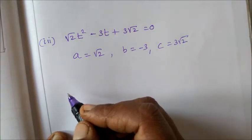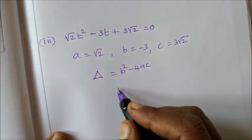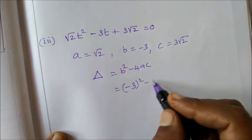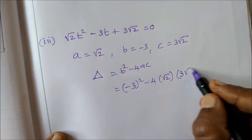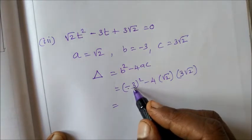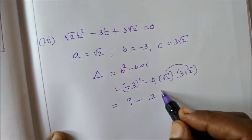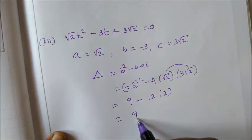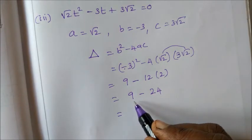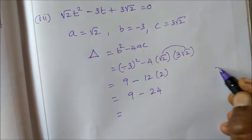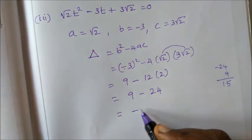To find nature of roots, delta = b² - 4ac. (-3)² minus 4 × √2 × 3√2. Minus square is plus, 3 squared is 9. Minus 4 threes are 12, √2 × √2. √2 × √2, so 9 minus 12 twos are 24. 9 subtract is -15.